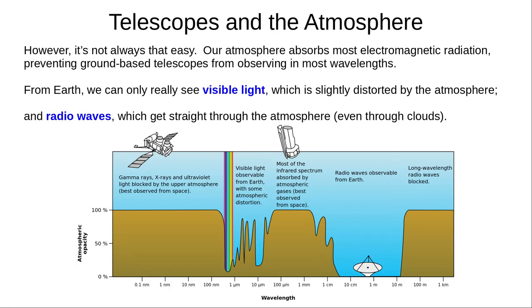However, our atmosphere makes many of these observations difficult. It absorbs most of the electromagnetic spectrum, preventing ground-based telescopes from observing in most wavelengths. This image shows which wavelengths get through our atmosphere. From the ground, we can only really see visible light, which gets slightly distorted by our atmosphere, and radio waves, which get straight through, even through clouds.